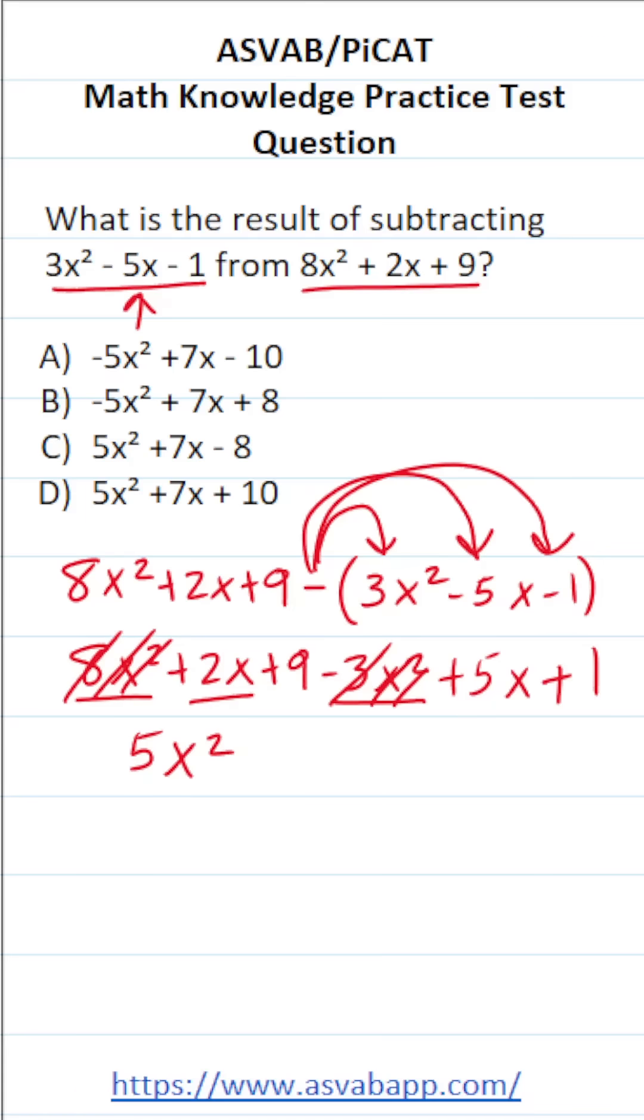Next we have 2x and 5x. 2x plus 5x is going to be 7x. Cross them out now that we've combined them.